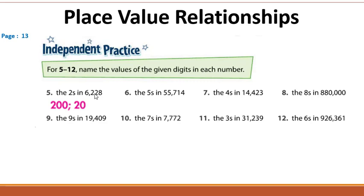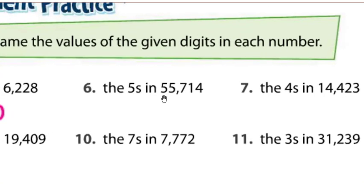Ali answered question six. The first five has a value of 50,000 and the second five has a value of 5,000. Thank you, Ali.